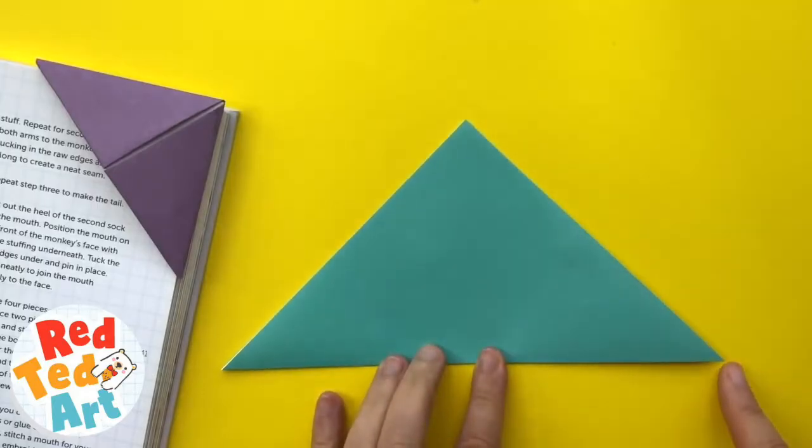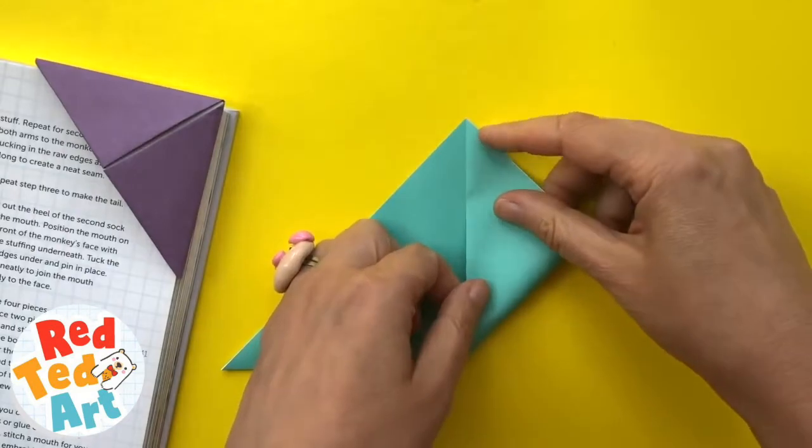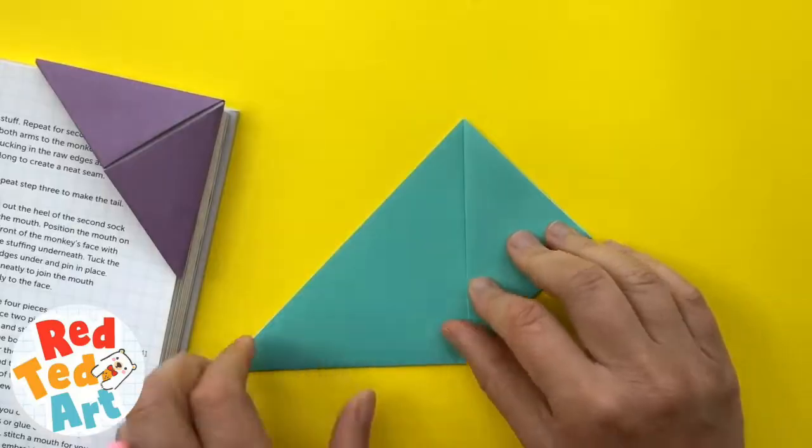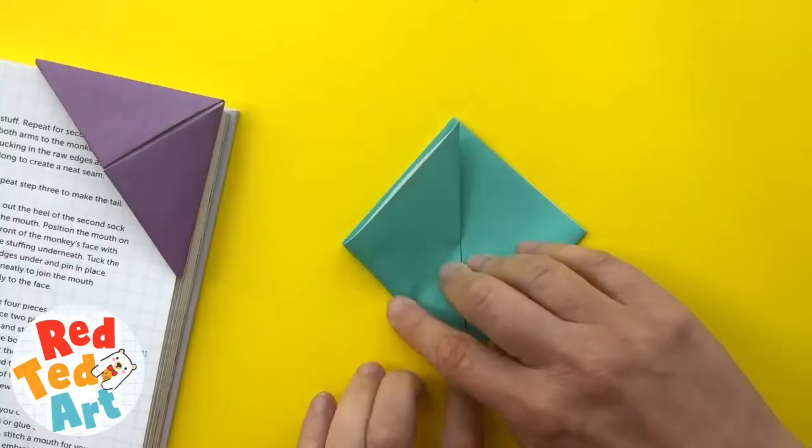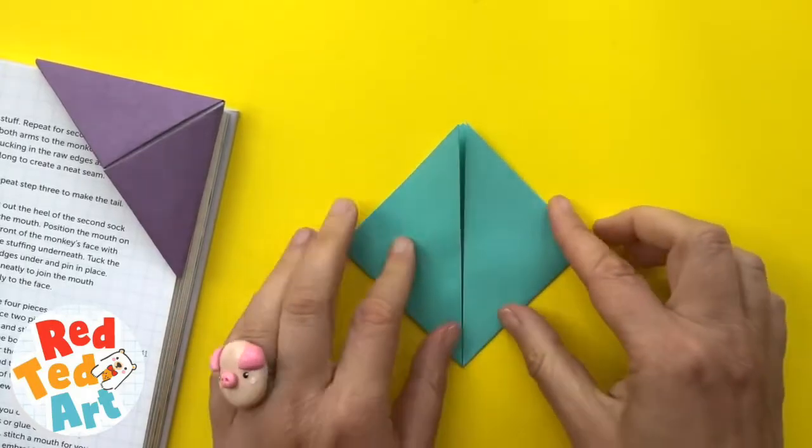Now, you bring the pointy corner up to this one and repeat. Always make nice, neat creases, because that will help you later on.